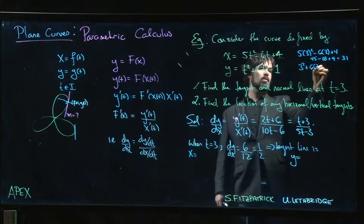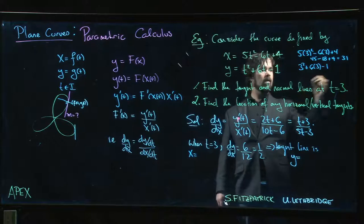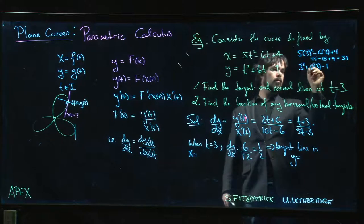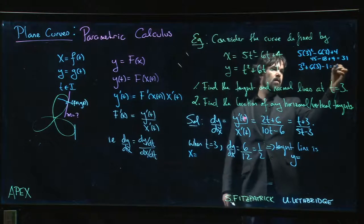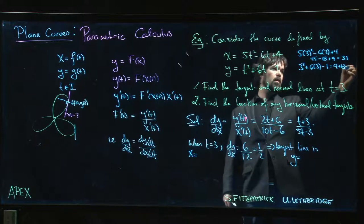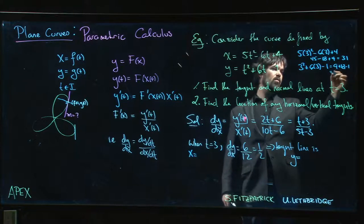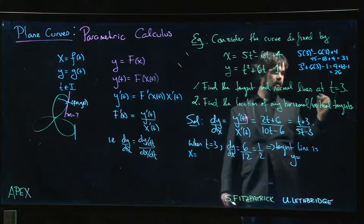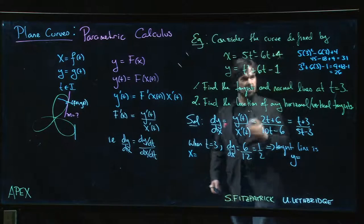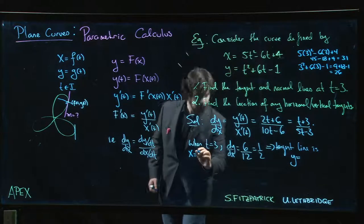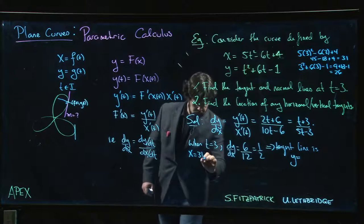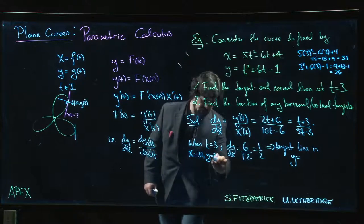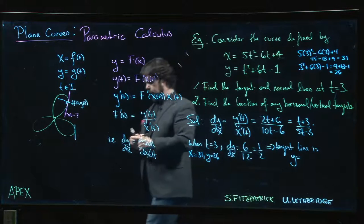And y is 3 squared plus 6 times 3 minus 1, so that's 9 plus 18 minus 1, which gets me to 26. I need those values. I need x equals 31, y is 26.